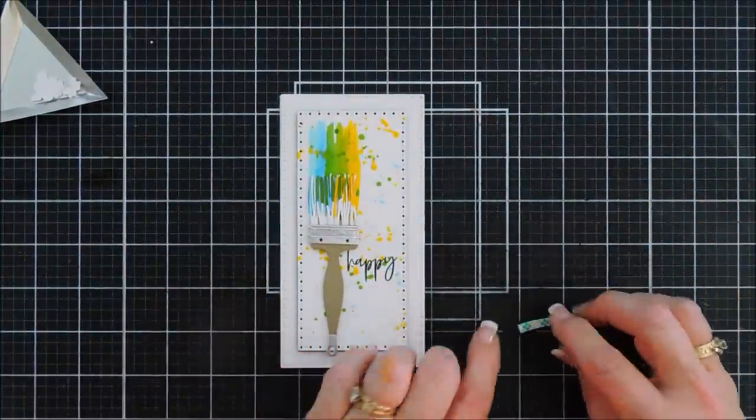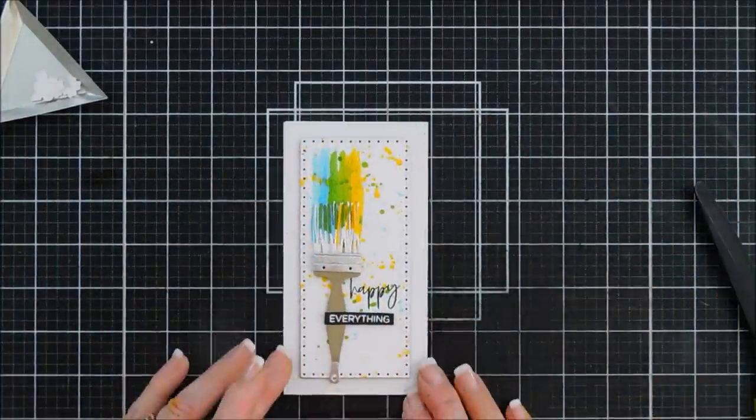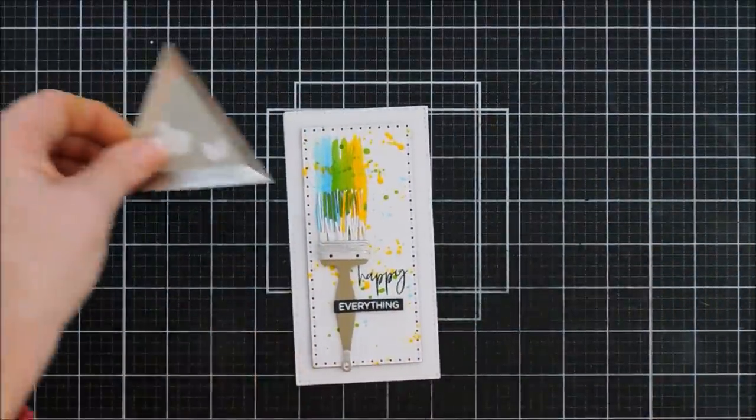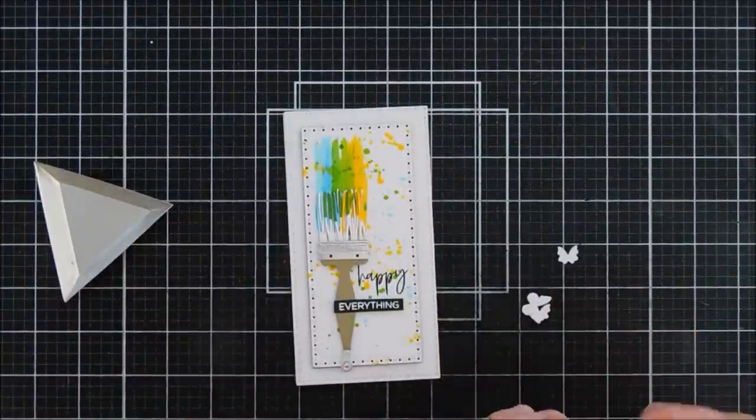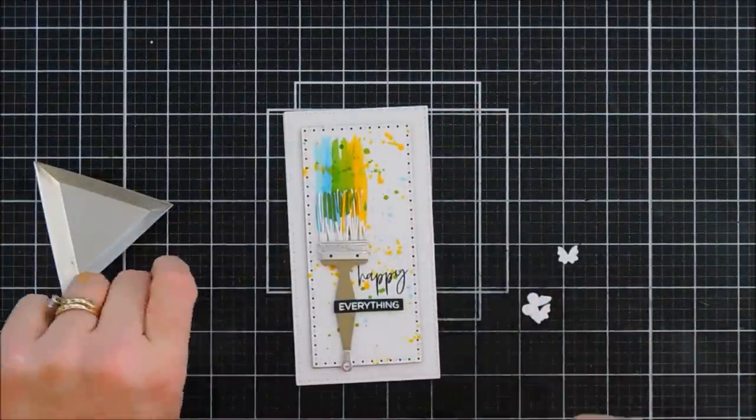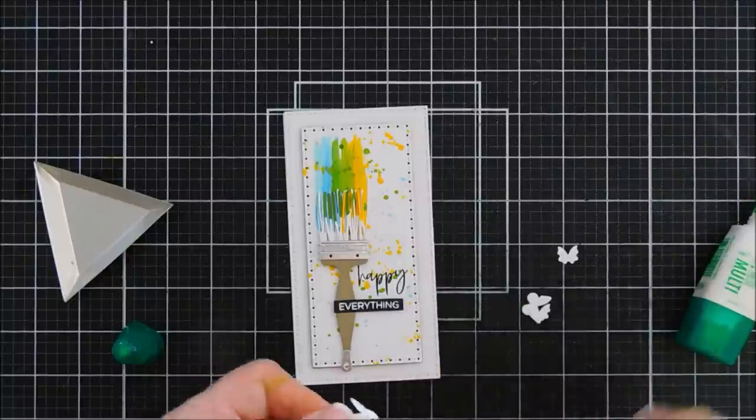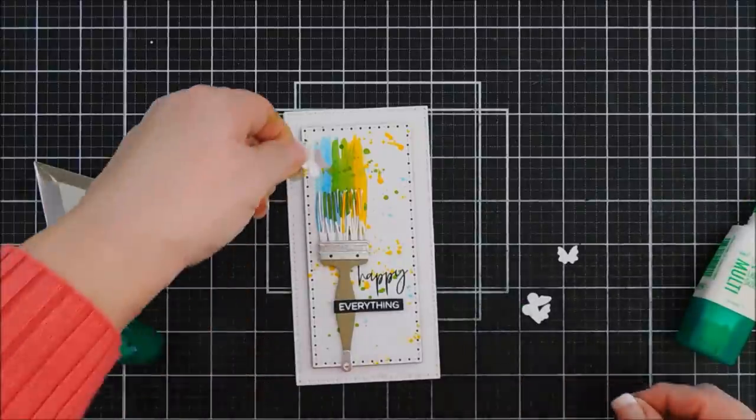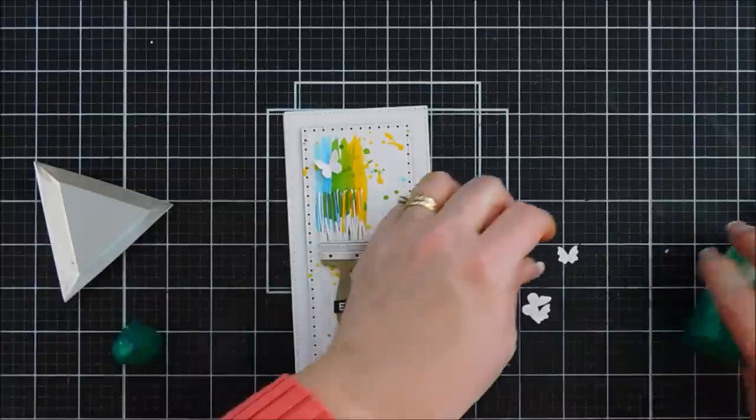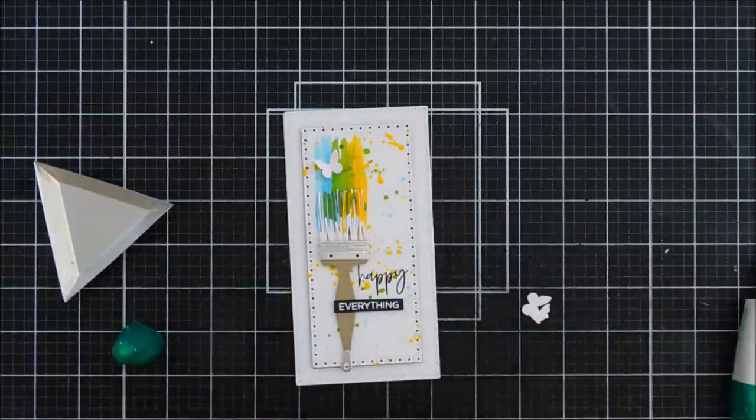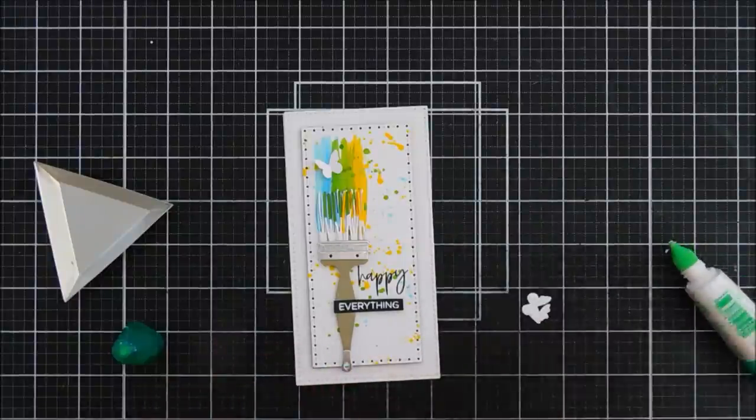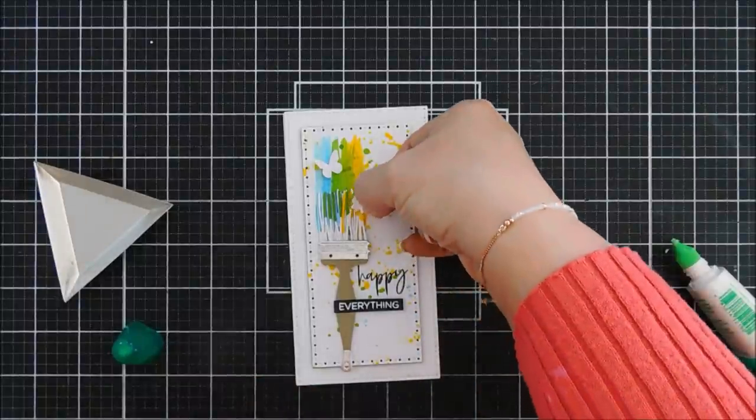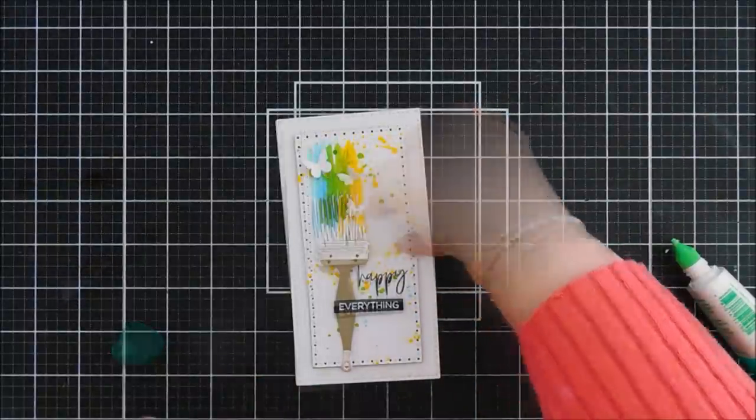And then we'll add our everything. Lovely. And then we have our butterflies. I'm going to keep, I kept these white. Because this way I can add a little bit of glue. And I can put them on our little paint area. And I think they will stand out on our paint brushes.